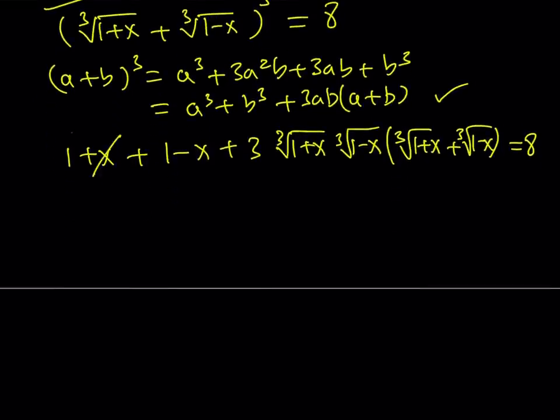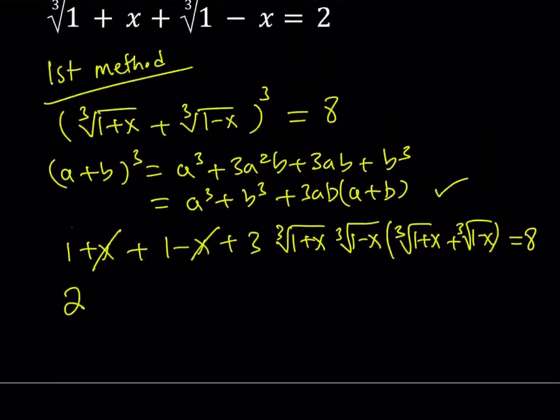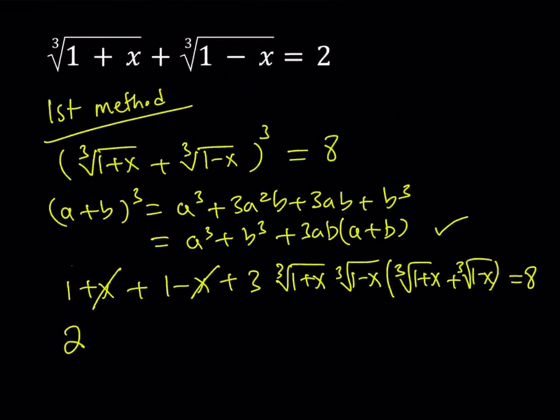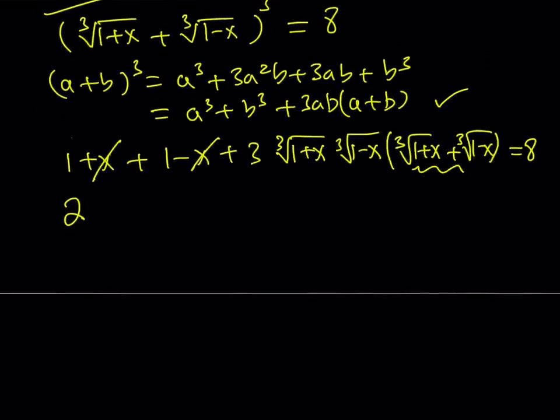Let's go ahead and simplify this. This x cancels out, 1 plus 1 is equal to 2. Now, notice that we have cube root of 1 plus x plus cube root of 1 minus x equals 2. So this is equal to 2.